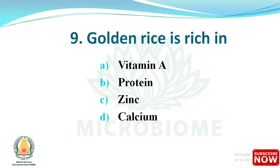Question: Golden rice is rich in? Options: vitamin A, protein, zinc, and calcium. The right answer is option A - vitamin A.